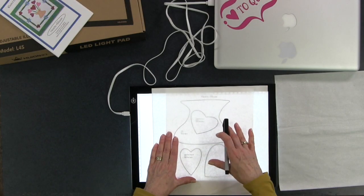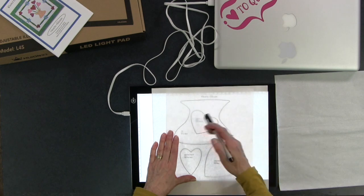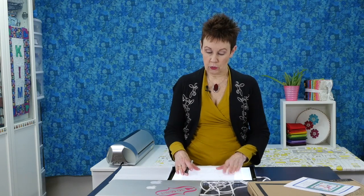You might want to use this if you were doing wool applique, for example. You would trace your shapes onto the freezer paper first, and then that would go onto your wool and you could cut them out. I can see both of them really well.